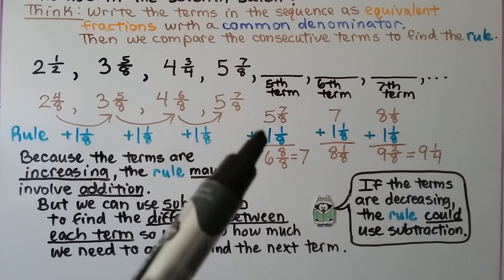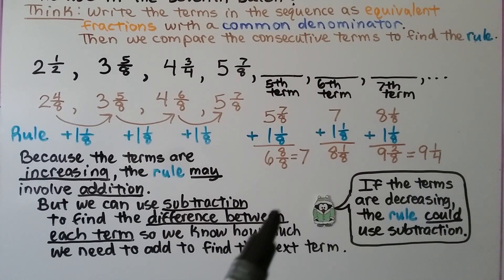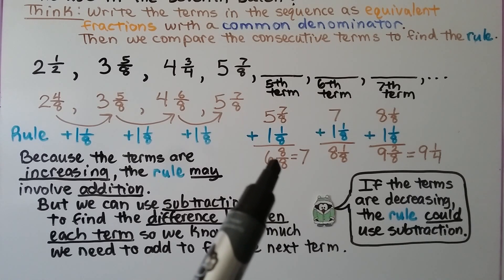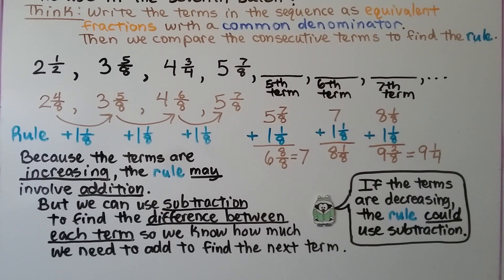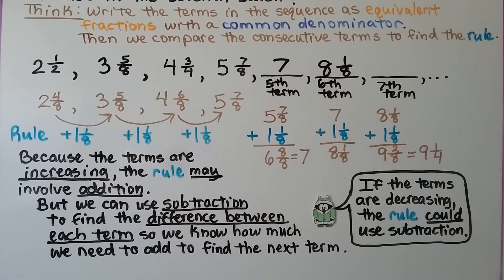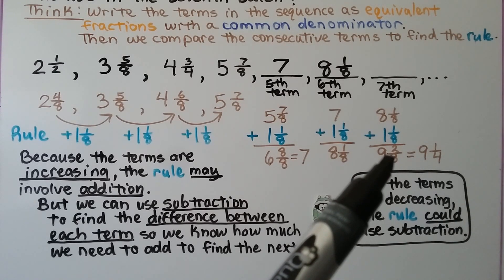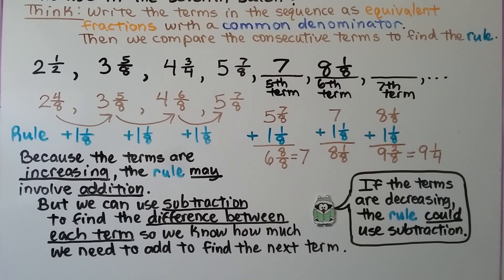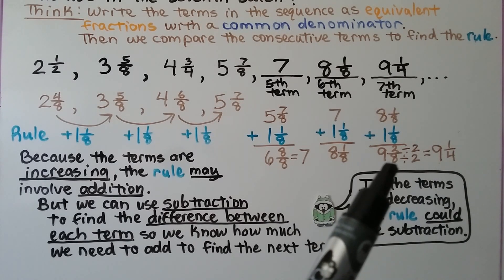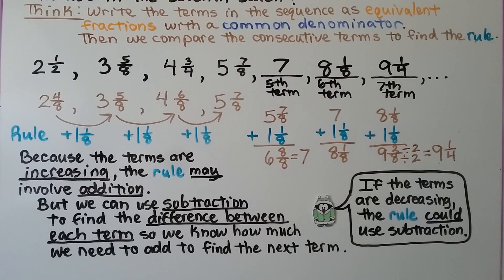We take five and seven eighths and add one and one eighth. Seven eighths plus one eighth is eight eighths; five plus one is six. When the numerator and denominator are the same, it equals one whole, so six plus one is seven — the fifth term is seven. Add one and one eighth to get eight and one eighth. Then eight and one eighth plus one and one eighth gives nine and two eighths, which simplifies to nine and one fourth — the seventh term.